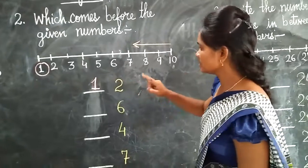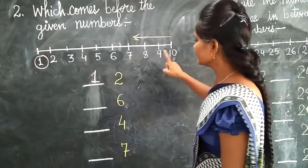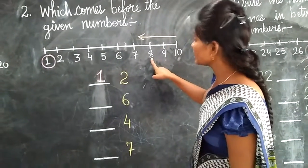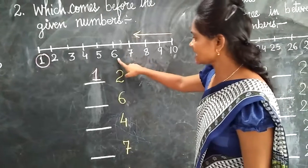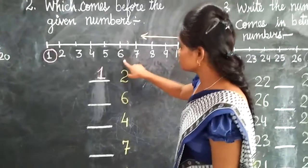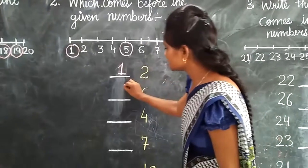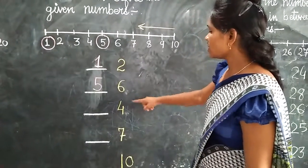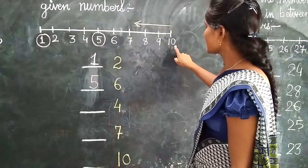Next number is 6. Now what comes before 6? We will count the backward numbers. What comes before 10? 9. What comes before 9? 8. What comes before 8? 7. What comes before 7? 6. What comes before 6? 5. So we will write here: 5.